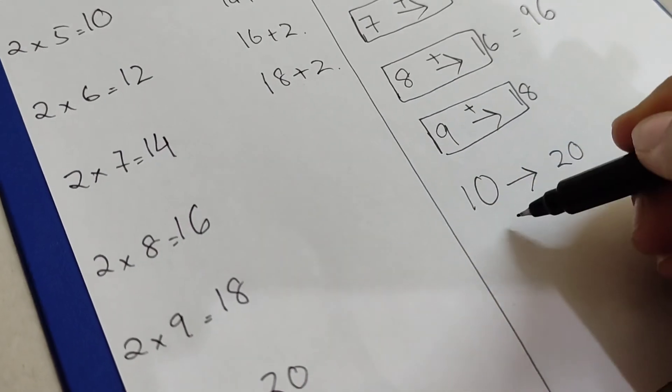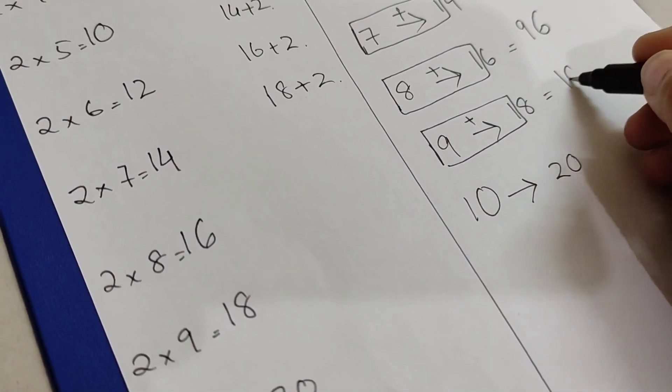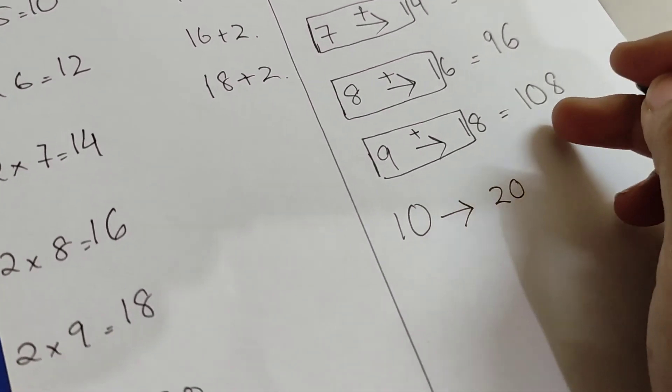We are adding nine plus one, that is ten. And what's left behind? Eight. One hundred and eight.